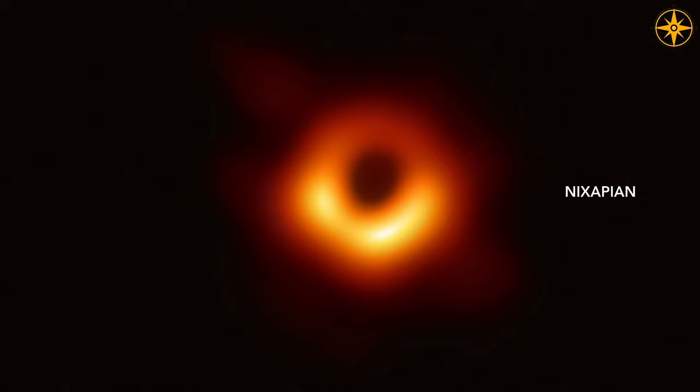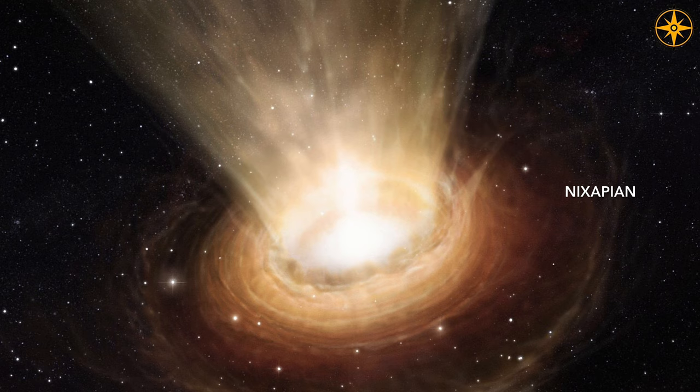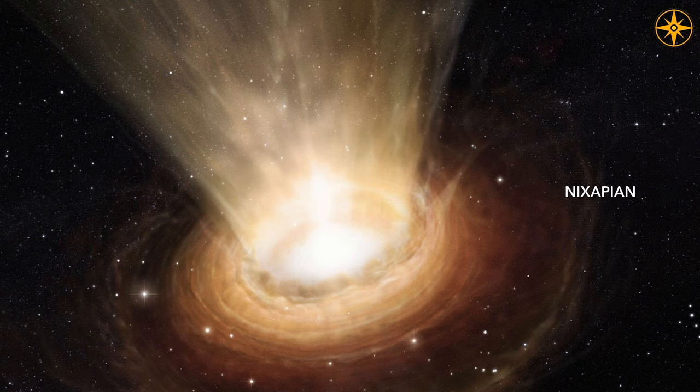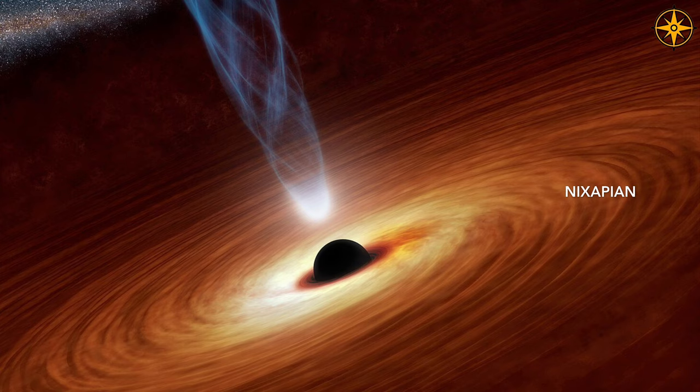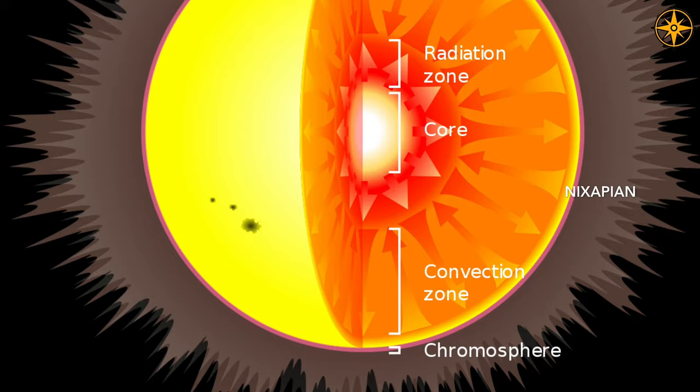The supermassive black hole M87 is very active, which means it constantly sucks all the particles and matter from the accretion disk. The quasars of the black hole are due to its extreme magnetic field and extend to at least 5000 light years. The mass of the black hole is 6.5 billion times the mass of the sun, and its size is that of our solar system.